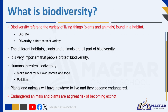Biodiversity refers to the variety of living things — plants and animals — found in a habitat. You can also refer to biodiversity as the many different kinds of life in an area. The word biodiversity is made up of two parts: bio and diversity. Bio means life, and diversity means differences or variety. So when we say biodiversity, we are talking about the variety of living things on our planet.